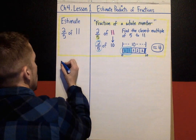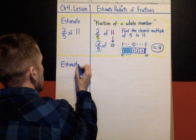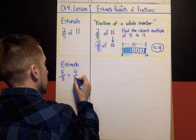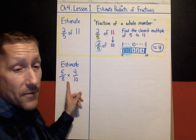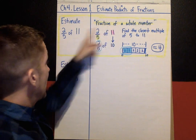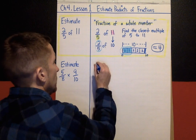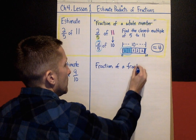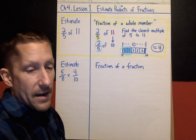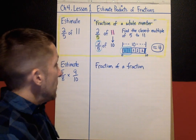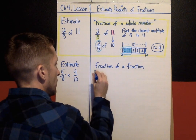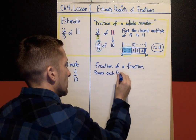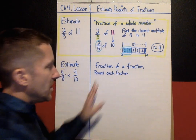The next kind of example is: how would you estimate five-eighths times nine-tenths? This is a fraction of a fraction — we have a fraction times a fraction. Up in the first example we had a fraction of a whole number; here it's a fraction of a fraction. On your practice problems, if it's a fraction times a fraction, you'll look at this part of your notes. The strategy for a fraction of a fraction is: you're going to round each fraction.